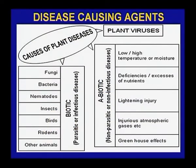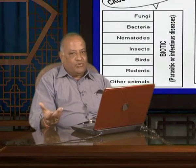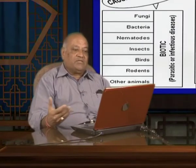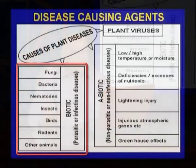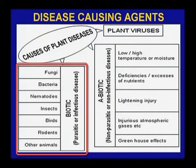Now, disease-causing agents: as discussed earlier, there are two types — biotic and abiotic. Under biotic disease-causing agents: fungi, bacteria, nematodes, insects, and vertebrate pests like birds, rodents, and other animals, as well as plant viruses. Nowadays, mycoplasma and rickettsia have also come up at a great level.